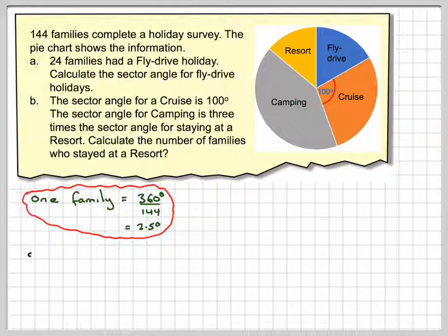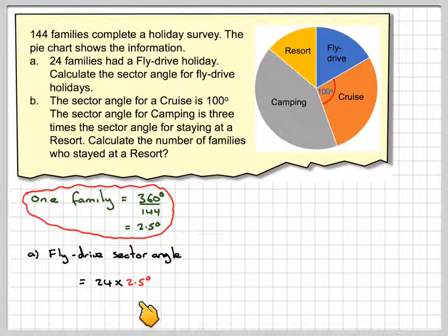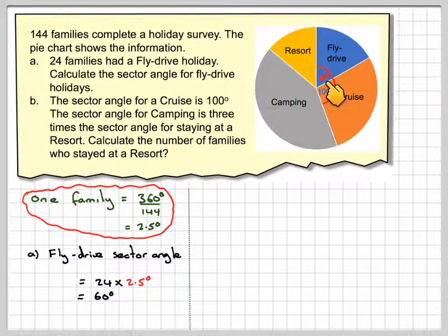Therefore, if we have 24 families, it's going to be 24 times 2.5, which is 60 degrees. So this angle here is 60 degrees.